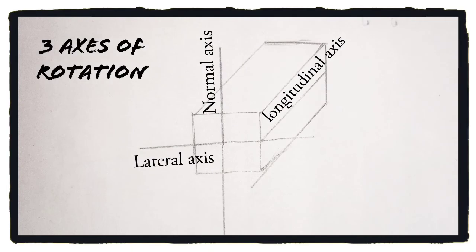Before considering the direction of motion and its controls, we need to know the three axes on which the plane performs its movement. They are longitudinal, lateral, and vertical or normal axis.